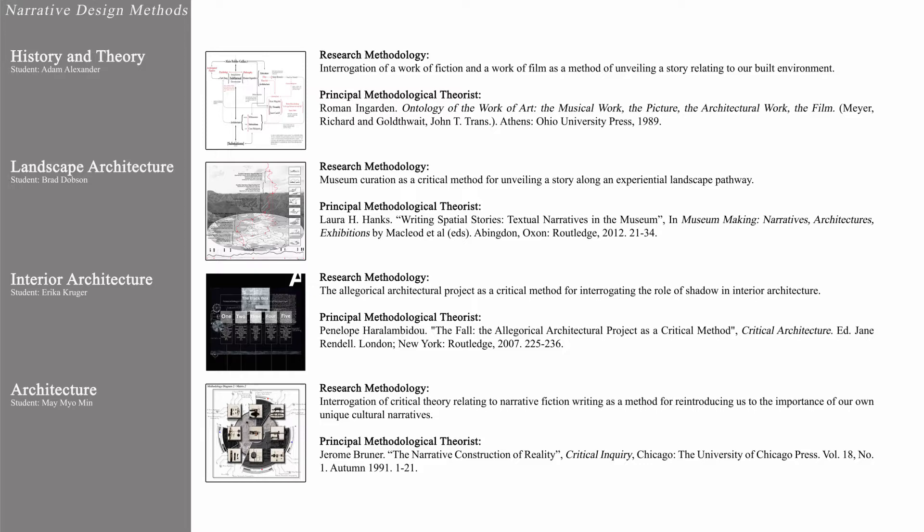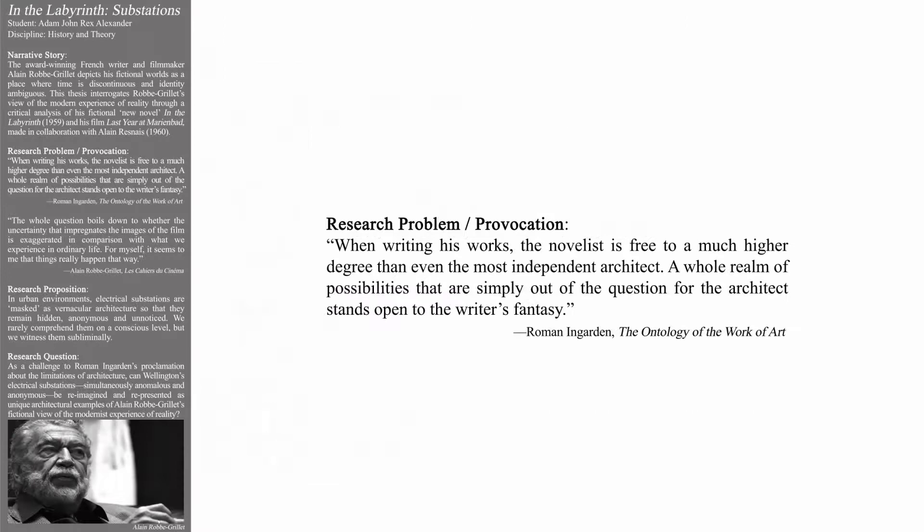The first research methodology we will discuss is by history and theory student Adam Alexander. In his book, The Ontology of the Work of Art, philosopher Roman Ingarden argued that when writing his works, the novelist is free to a much higher degree than even the most independent architect. A whole realm of possibilities that are simply out of the question for the architect stands open to the writer's fantasy.